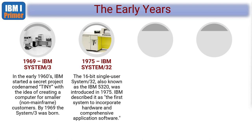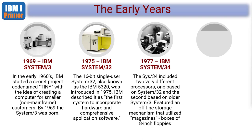This machine was smaller than the room-sized machines, as you can see from the graphic, but it's still a hefty piece of kit. About two or three years later, in 1977, was the first real step toward the shape of the modern machines. IBM's customer base had liked the System 3 and the System 32, so IBM released the IBM System 34. It had two processes built in — one based on the System 32 and the other on the System 3 — so you could switch modes between the two. It also featured an offline storage mechanism utilizing magazines of eight-inch floppies.